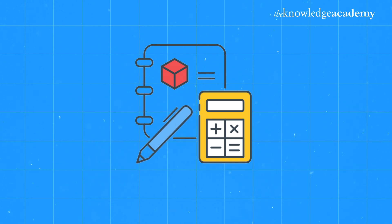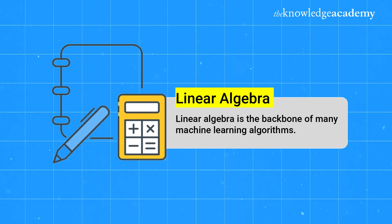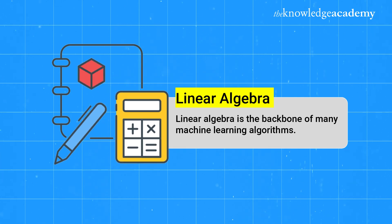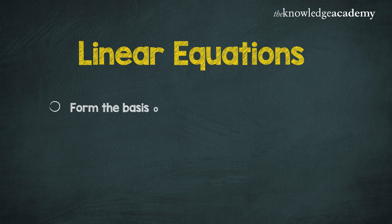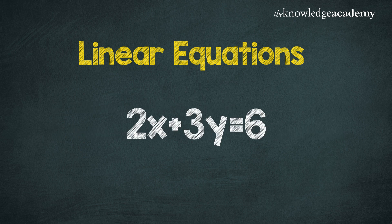Next, let's talk about linear algebra. Linear algebra is the backbone of many machine learning algorithms. Linear equations form the basis of linear algebra and are used to represent relationships between variables. A linear equation like 2x + 3y = 6 represents a straight line when plotted on a graph. In machine learning, linear equations are used in models like linear regression.